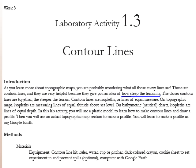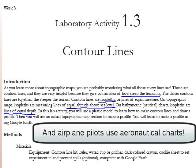Contour lines are called isopleths. Iso means same — a lot of scientific terms start with that prefix, iso. So as soon as you see that, you know you're talking about things that are similar. Contour lines are isopleths, or lines of equal measure. On topographic maps, isopleths measure lines of equal altitude above sea level, and on bathymetric or nautical charts they are lines of equal depth instead of equal altitude.